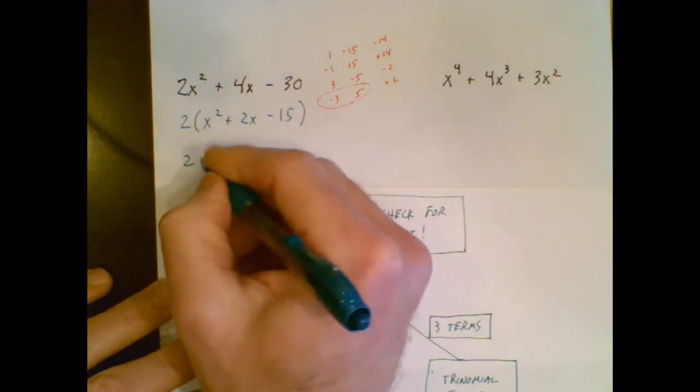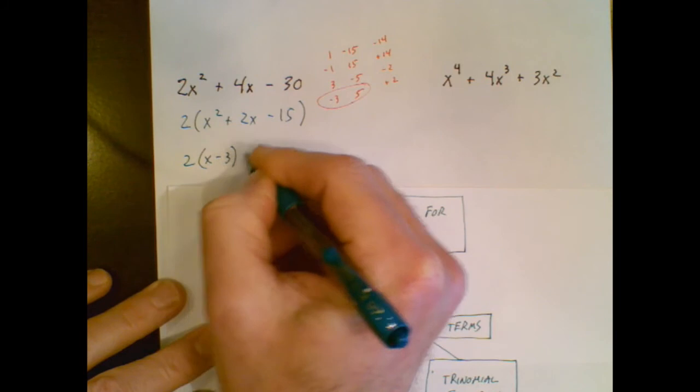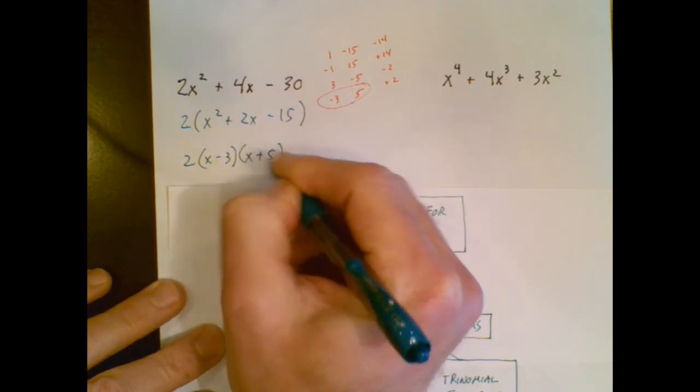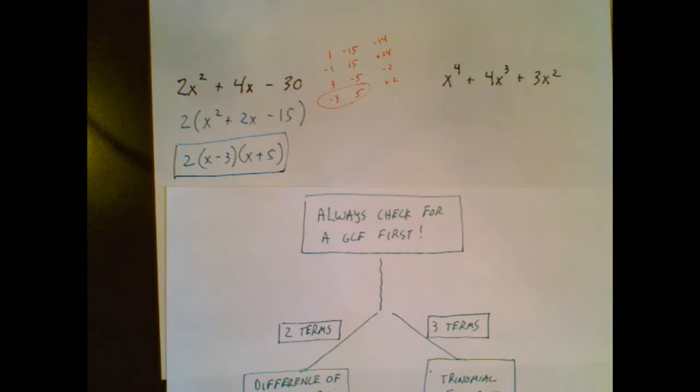The GCF stays. I follow this pattern. X minus 3. X plus 5. And I have my factored form.